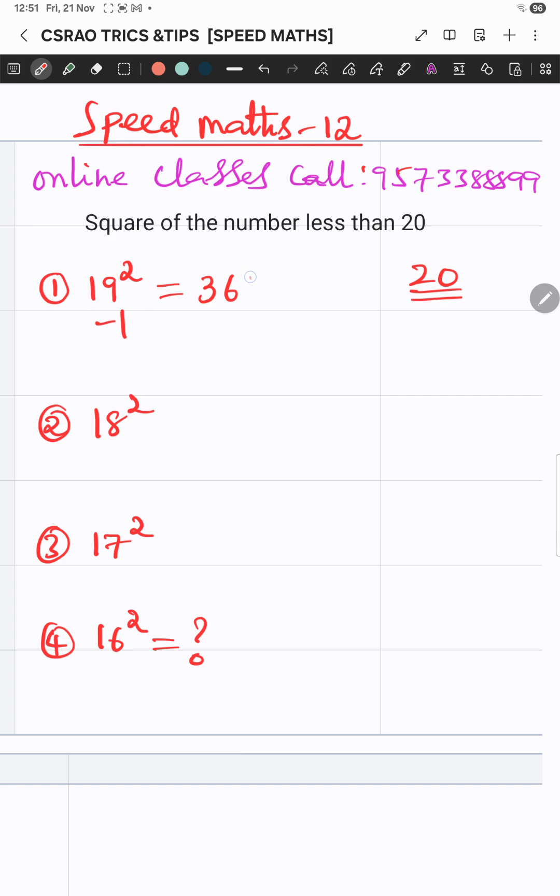1 square, 1 square is 1, so 361. Okay, 18. 18, how much is it less than 20? Now, 18 minus...